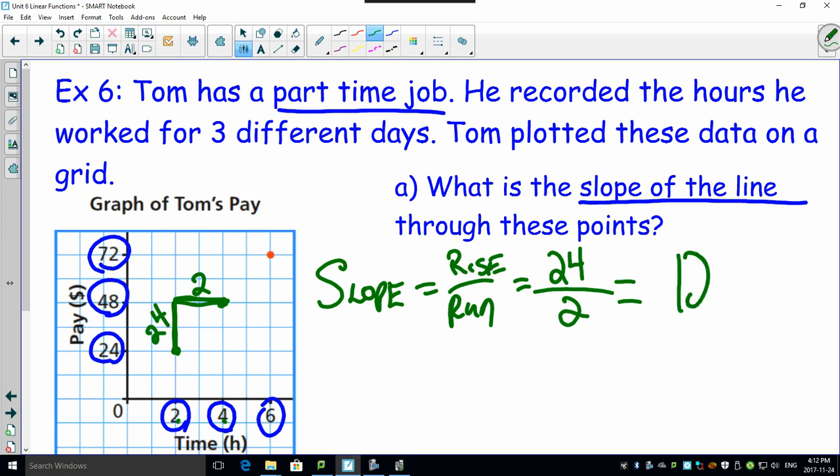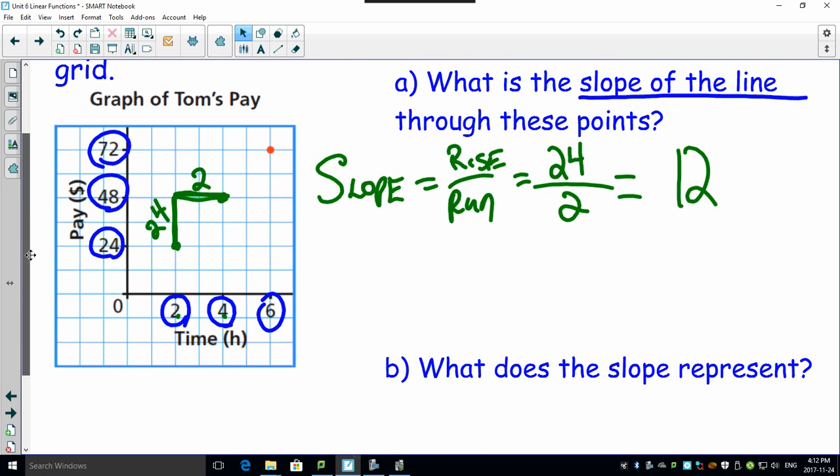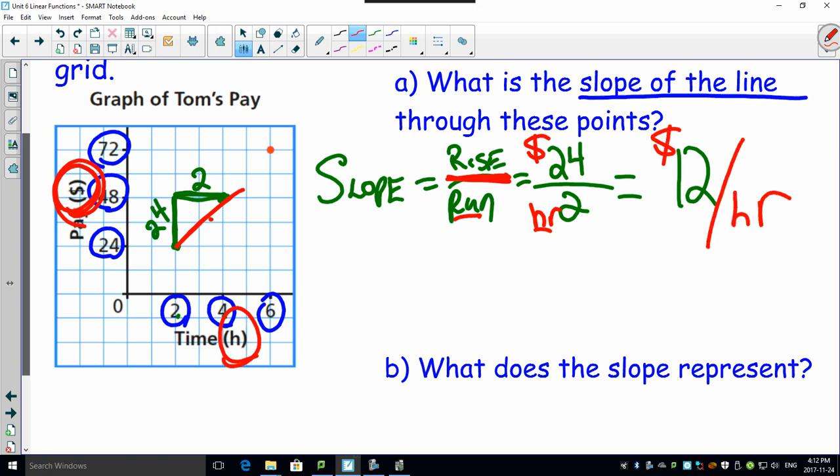If you work this out, this works to be a slope of 12. But here's the follow-up question: what does this slope represent? Think about it. What is rise? Rise is dollars. If I drew a line here, there's your dollars per hour. So this guy's being paid dollars per hour. His rise is in dollars, his run is in hours. So he is making $12 an hour and that's what the slope represents.